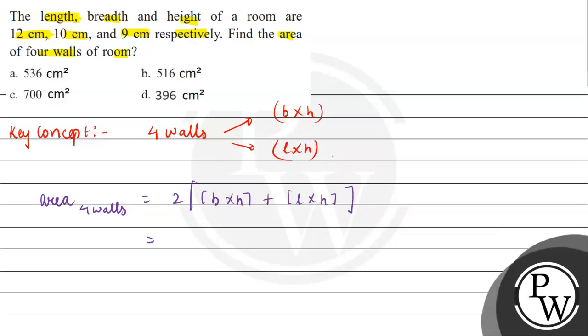So this will be equal to, here the length given is 12 cm, breadth given is 10 cm and height given is 9 cm. This equals twice of 10 multiplied by 9 plus 12 multiplied by 9.